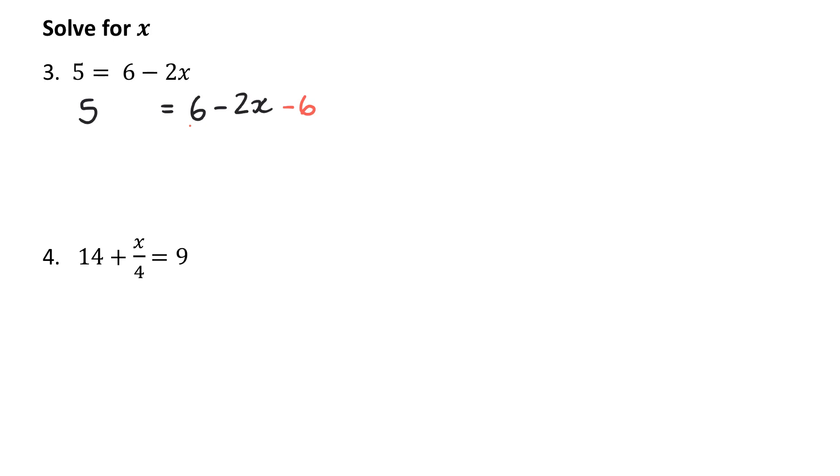But what I do to the right, I must do to the left. Or what I do to the left, I must do to the right. So now my left-hand side, 5 minus 6 is negative 1. And on the right-hand side, 6 minus 6 is 0. So I just get negative 2x. Next, I want to try and get x by itself. But x is being multiplied by negative 2. So I'm going to do the opposite, divide both sides by negative 2. So at the end, I'm going to get x is equal to, a negative divided by a negative is a positive, x is equal to 1 half. So the number that solves the equation is when x is a half, the equation is true.